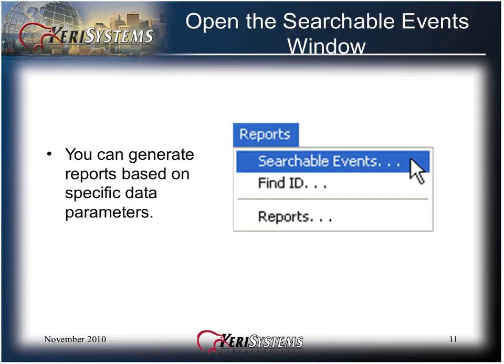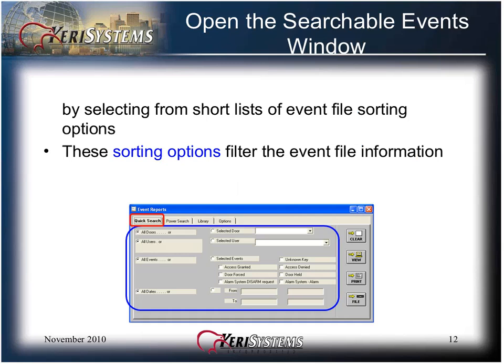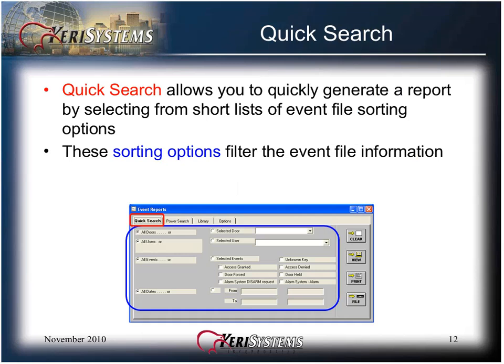You can open the Searchable Events window and generate a report based on specific data parameters by clicking the Reports pull-down menu and clicking Searchable Events. Two types of searchable event reports are available: Quick Search and Power Search. Power Search is covered in a separate presentation. The Quick Search allows you to quickly generate a report by selecting from short lists of event file sorting options. These sorting options filter the event file information.